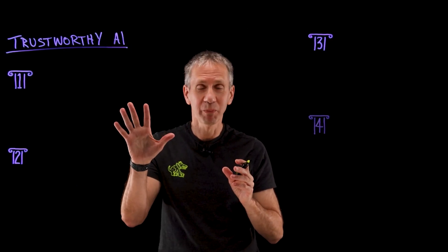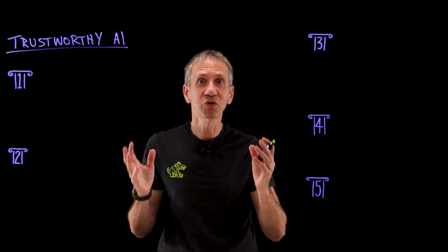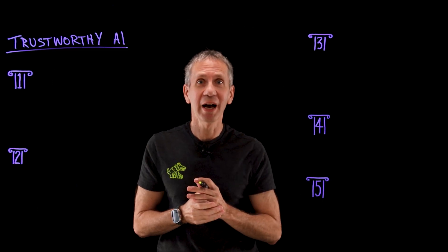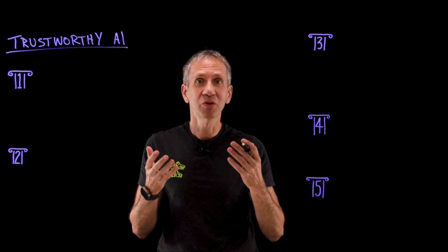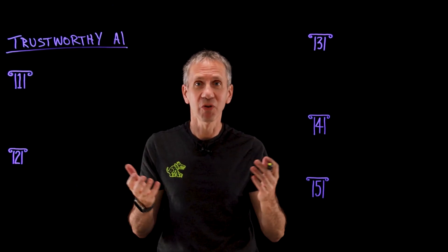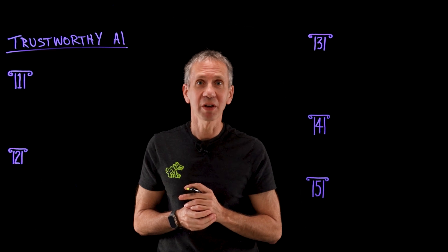What we want is a trustworthy AI, and IBM came out with five pillars or principles of trustworthy AI. These are the things that we want to expect from an AI, so let's take a look at what they are.